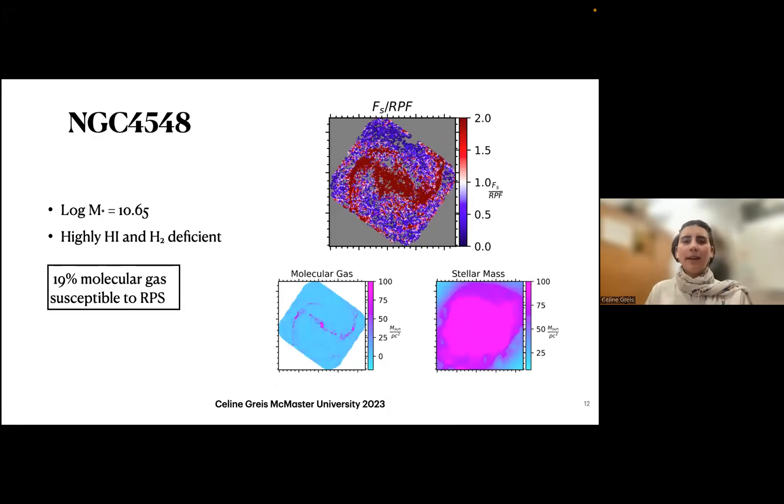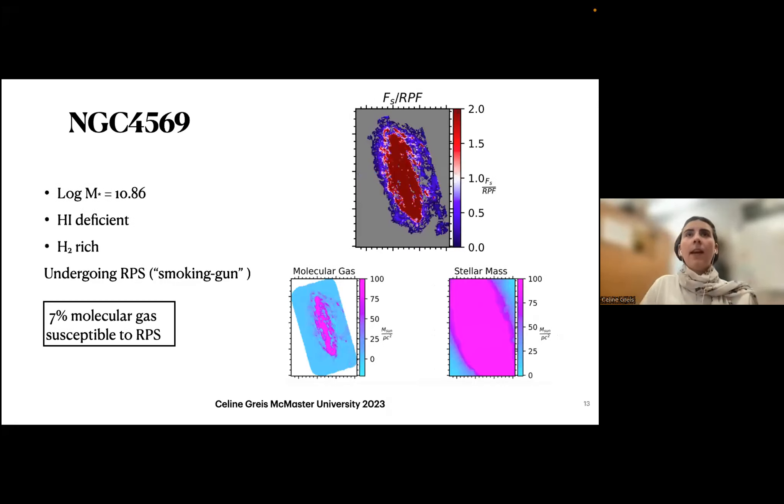Then we have NGC 4548. It's a very gas-poor galaxy, both deficient in H1 and H2. You can see it just holds on to its gas where there's something left. It's interesting that we found that 20% of its molecular gas would be susceptible, I guess because the molecular gas density is so low at this point. It has been stripped before, and maybe it's now in the process of having a second infall.